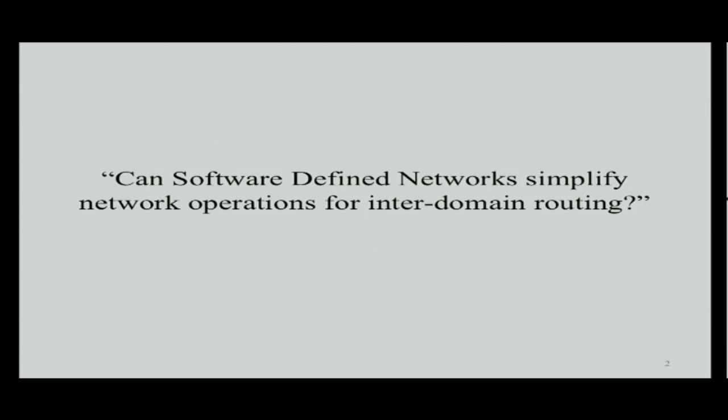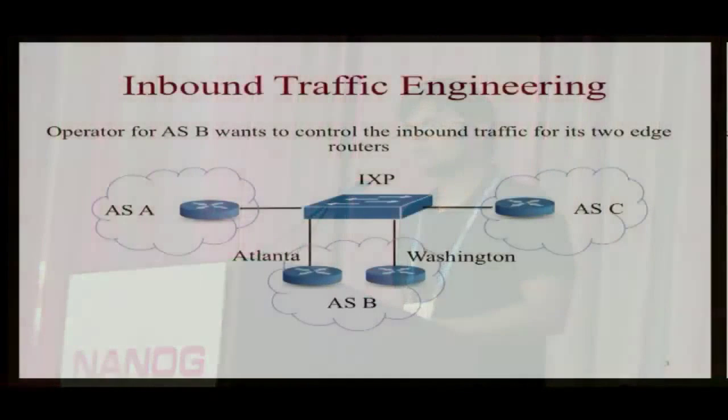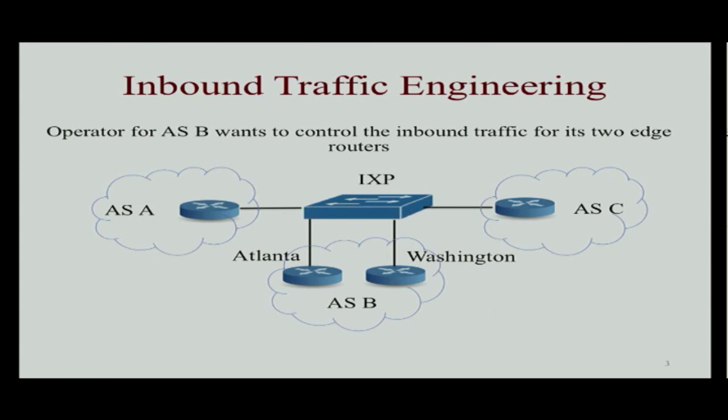I'll use this platform to ask this one question: can SDN networks simplify network operations for inter-domain routing? I will begin with an example to make a case that SDN can be useful. What we have here is three ASes, and ASB has two edge routers — one in Atlanta, one in Washington — all three ASes connected at an exchange point. The operator for ASB wants to control how inbound traffic enters its network, either via the Atlanta edge router or via the Washington edge router.